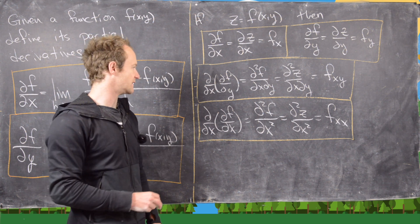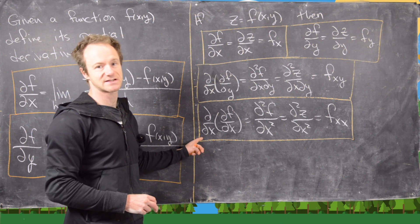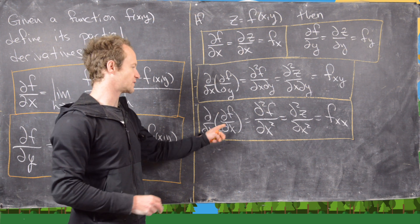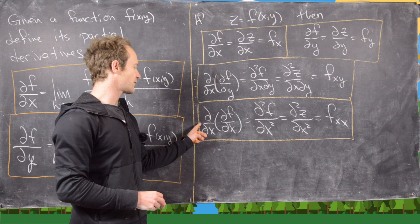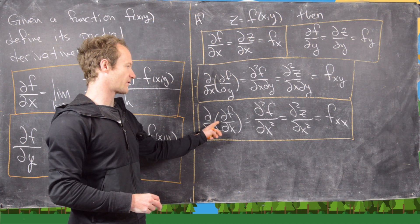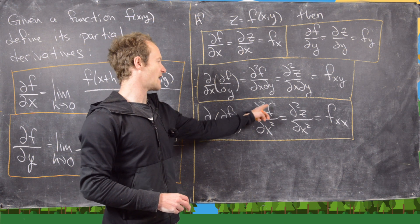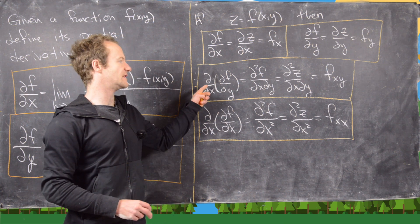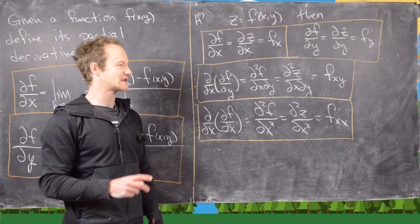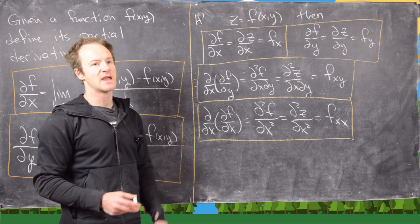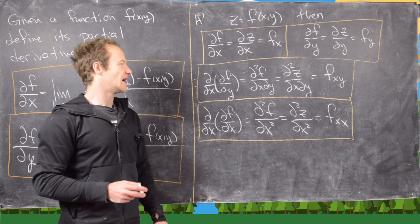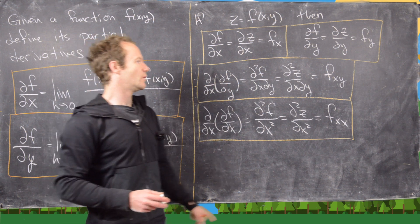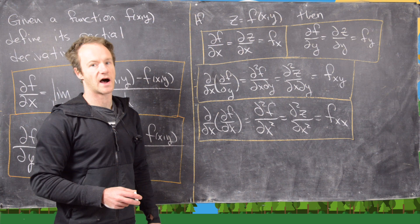There's the pure second partial in the x direction — ∂²f/∂x², or f sub xx — and the same for y. There's also the mixed partial, where you might think there are two (in either order), but those are equal under most circumstances, which is a theorem we'll state later. The mixed partial is denoted f sub xy.